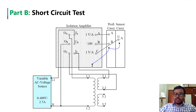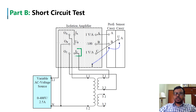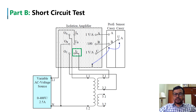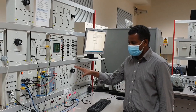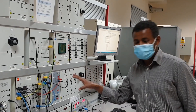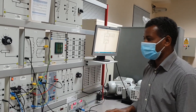This is the experimental setup for the short circuit test of the single-phase transformer. Here, we have replaced the voltmeter of the open circuit test with an ammeter. Therefore, we are measuring two currents and one voltage from the short circuit test.